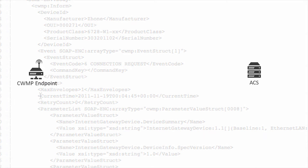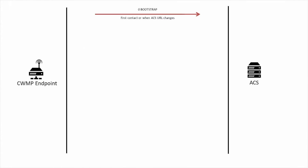Let's go through the types of events. The most fundamental is zero bootstrap. This event tells the ACS that the CPE is contacting it either for the first time or because the URL of the ACS has changed. When an ACS receives a bootstrap event, it will often begin a series of initial configuration steps on the CPE. The one boot event is sent by the CPE any time its software has been restarted, usually because of a physical reboot.